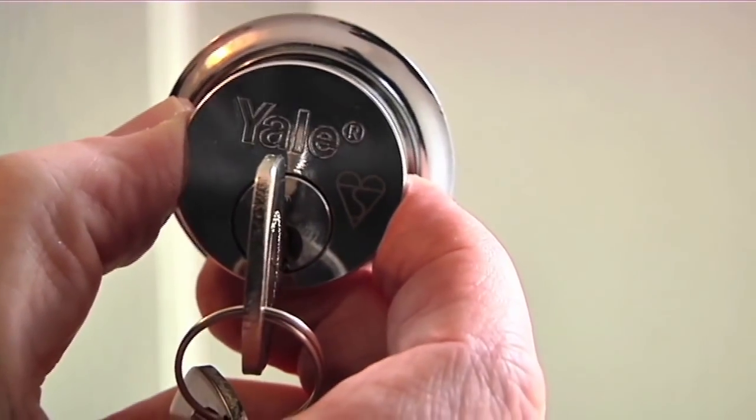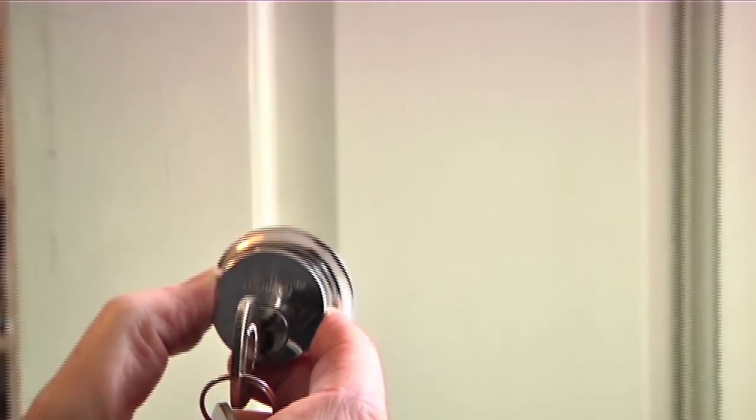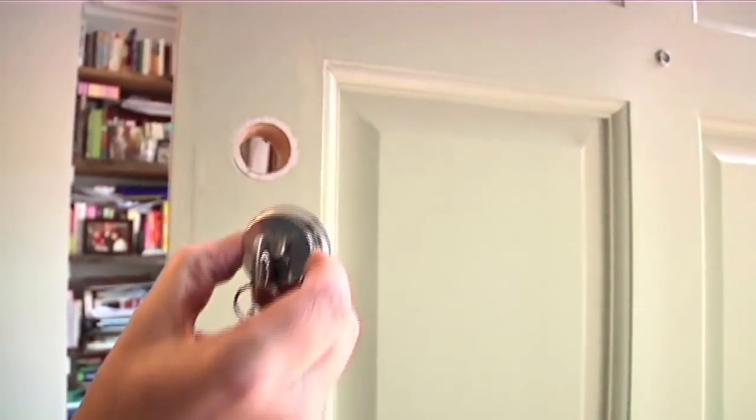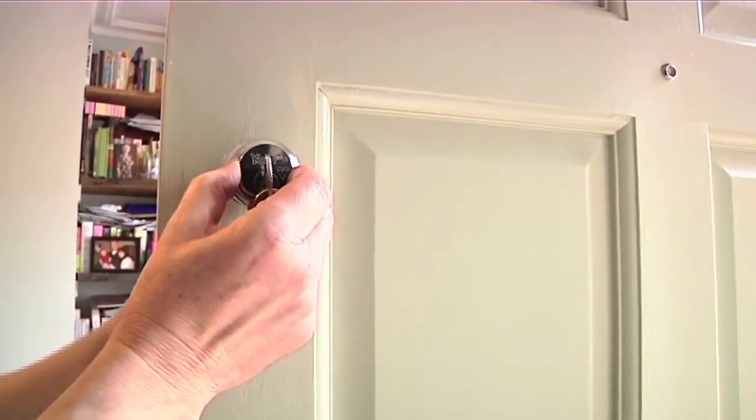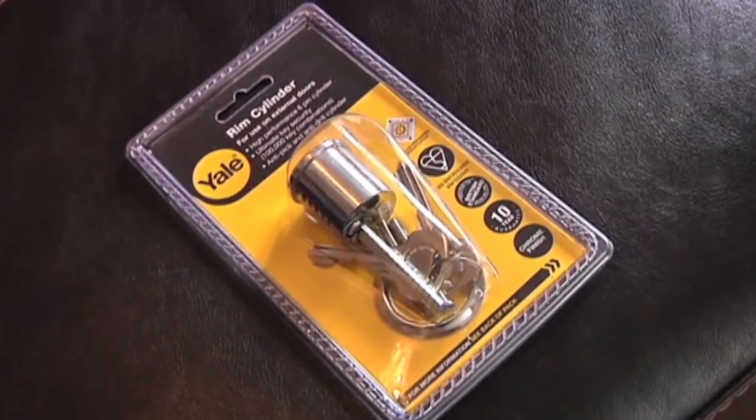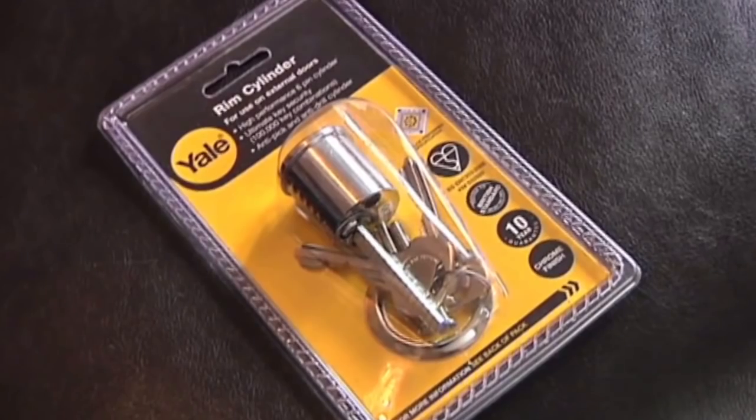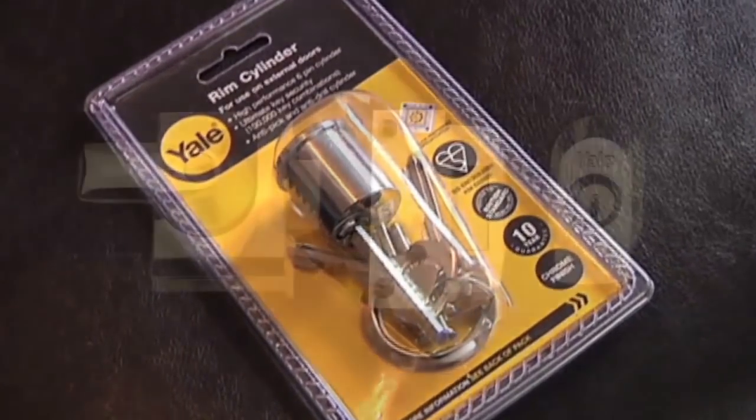Replacing the rim cylinder on an external timber door is an effective and easy way of making your home secure without having to change the entire lock or door. By upgrading to a British Standard Rim Cylinder, you will be confident in the knowledge that the cylinder has been independently tested to ensure it can withstand all forms of known cylinder attack.